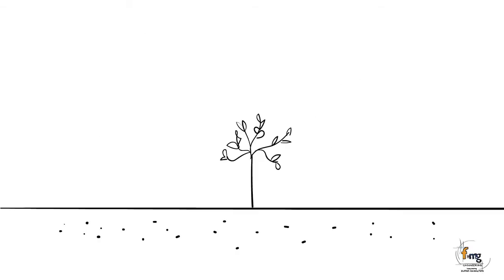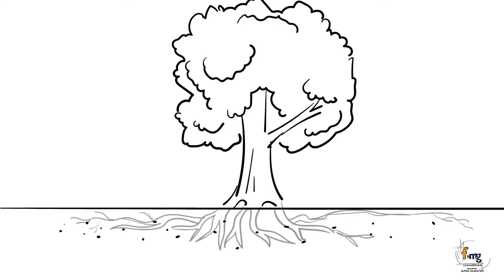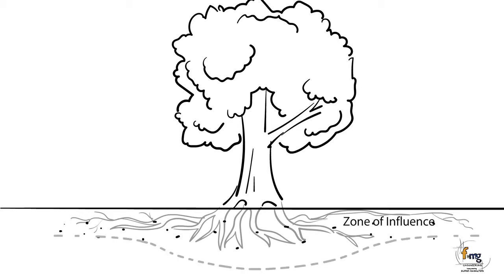As trees grow above the ground, so does their root system below the ground. Typically, the roots of the tree can extend as far as, or even beyond, the tree height. So for example, a 10 metre tall tree may have roots that extend 15 metres from that tree.